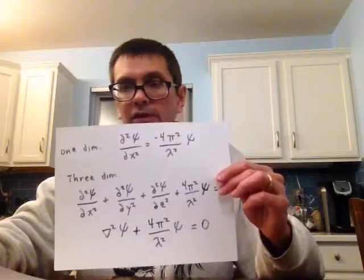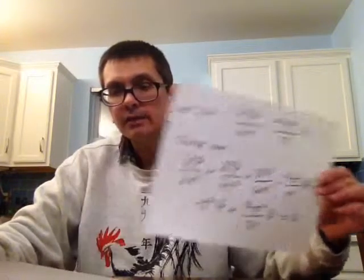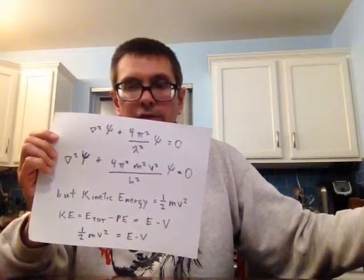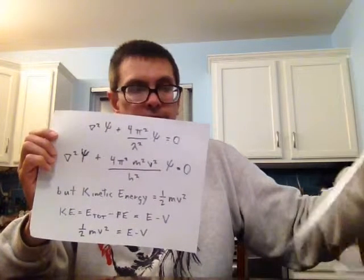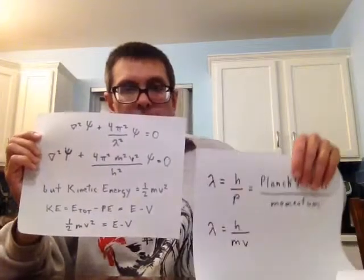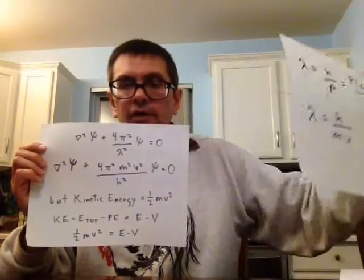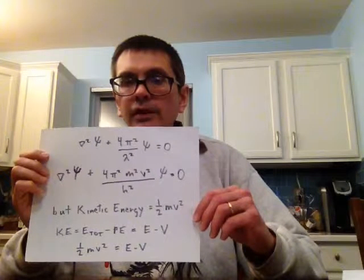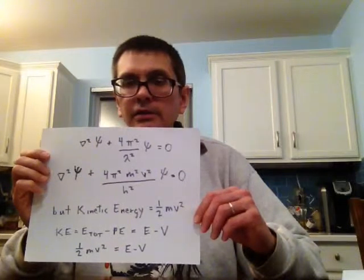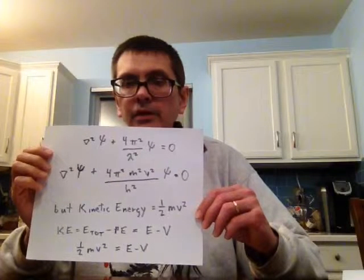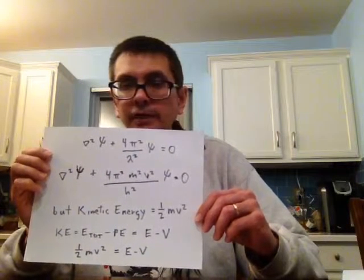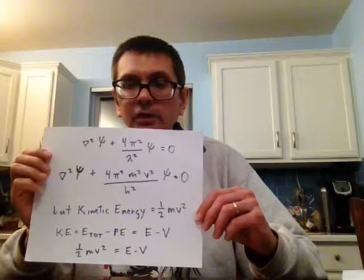Then we can substitute further because we knew our previous relationship that we can relate Planck's constant to the wavelength. So by substituting in, we can remove the wavelength and we get Planck's constant. Then we know that the kinetic energy is equal to the total energy minus the potential energy.